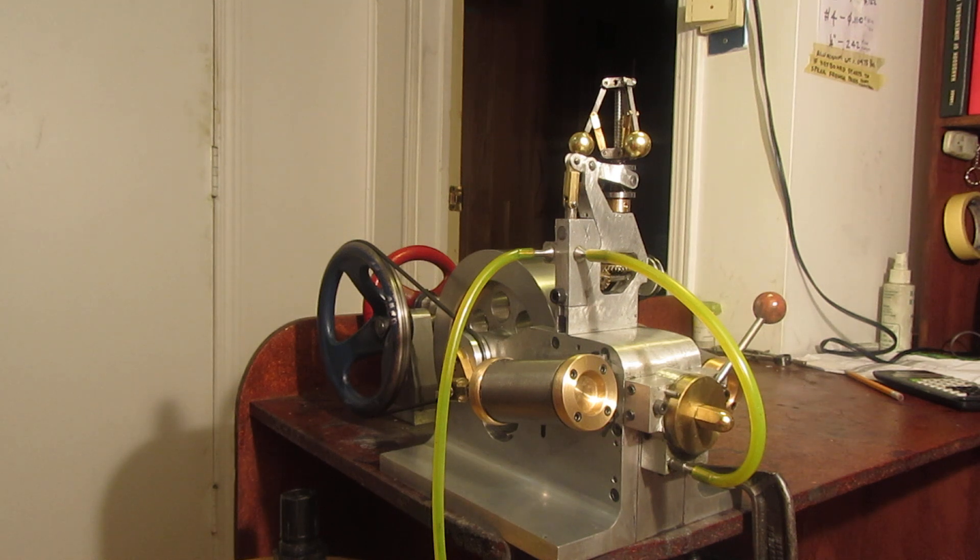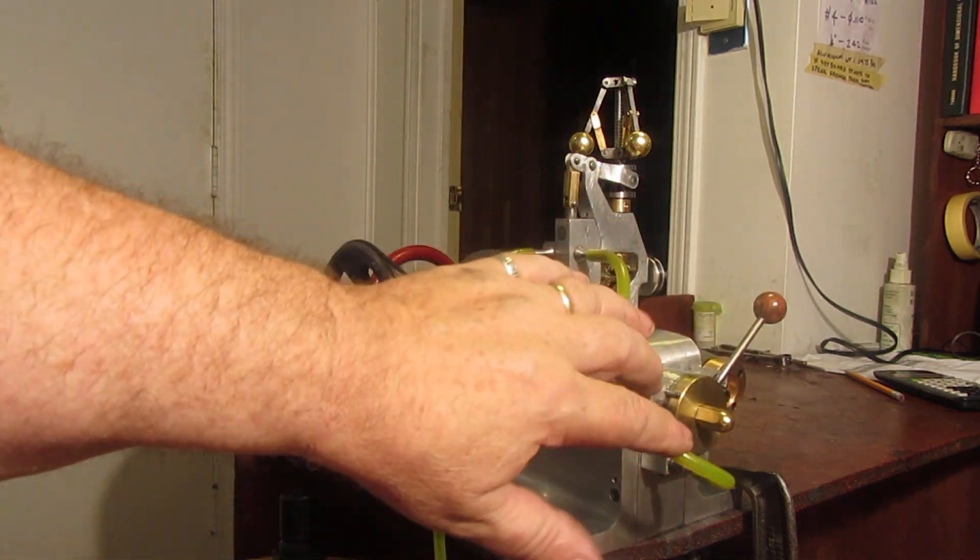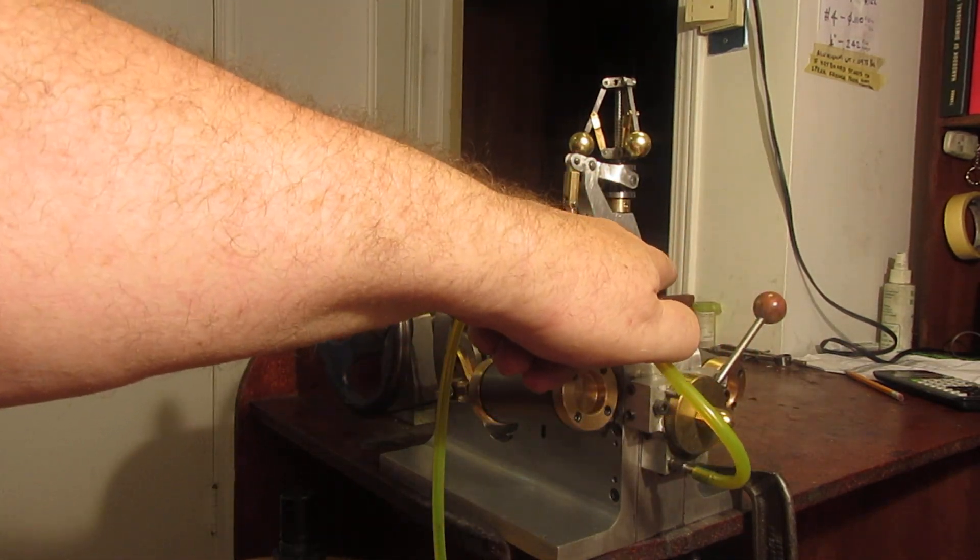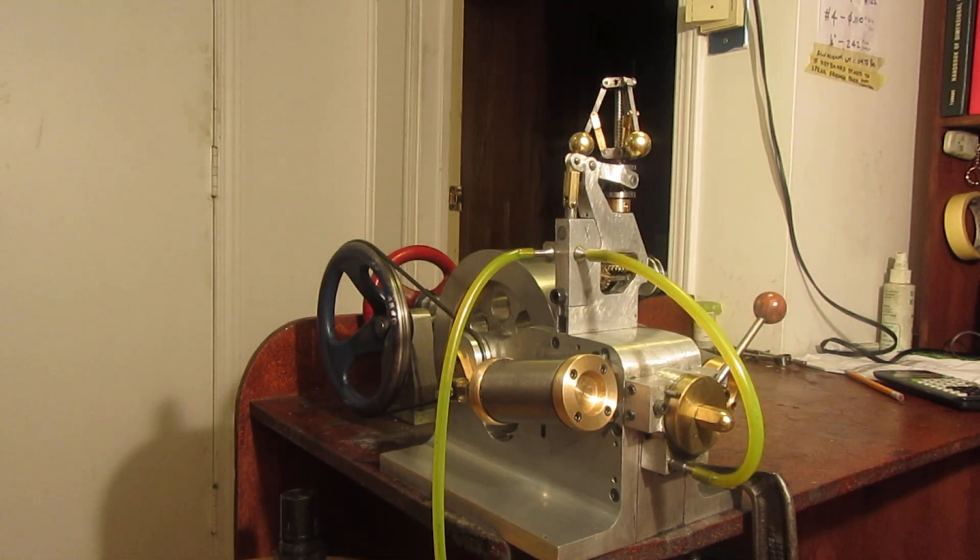And the other determining factor is how rapidly things are revolving. Now that can be taken care of between the gear ratio of your driving pulley on the engine and the driven pulley on the flyball governor.